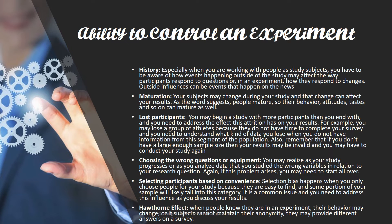Also remember, if you don't have a large enough sample size, then your results may be invalid, and you may have to conduct the study again. Choosing the wrong question or equipment — you may realize as your study progresses or as you analyze data that you've studied the wrong variables in relation to your research question. Again, if this problem arises, you need to start all over. Selecting participants based on convenience — selection bias happens when you choose only people for your study because they are easy to find, and some portion of your sample will likely fall into this category. It is a common issue, and you need to address this influence as you discuss your results. And then there is the Hawthorne effect — when people know they are in an experiment, their behavior may change, or if subjects cannot maintain their anonymity, they may provide different answers on a survey.